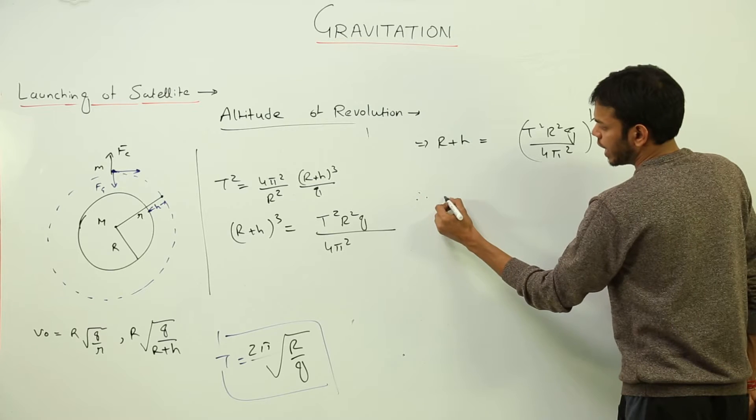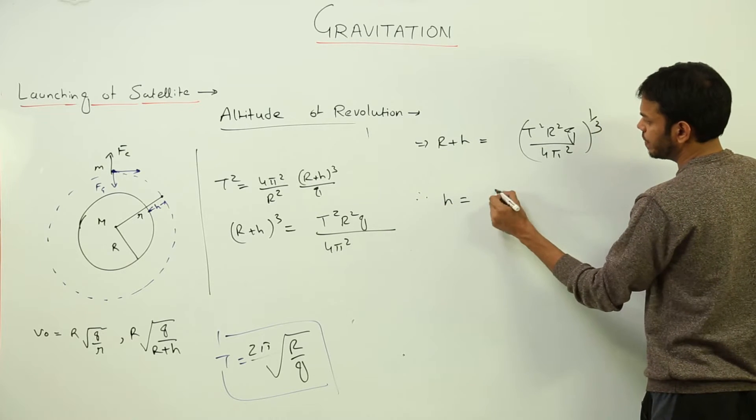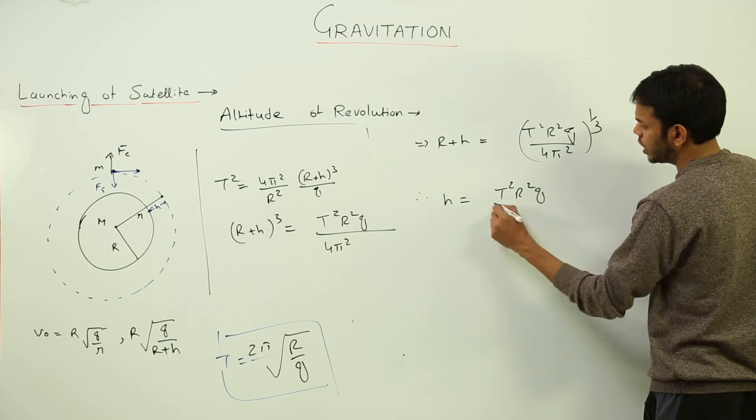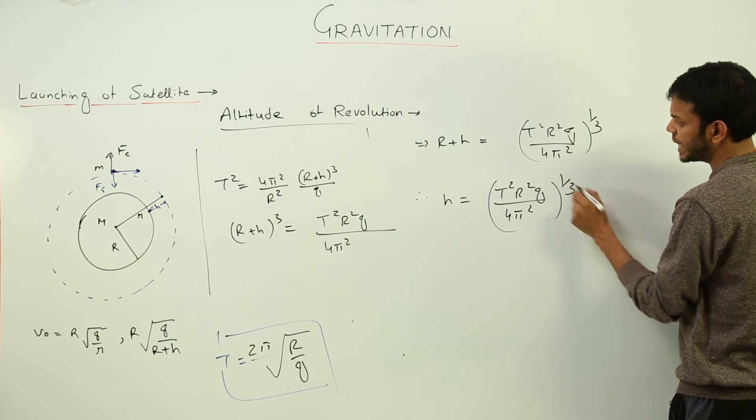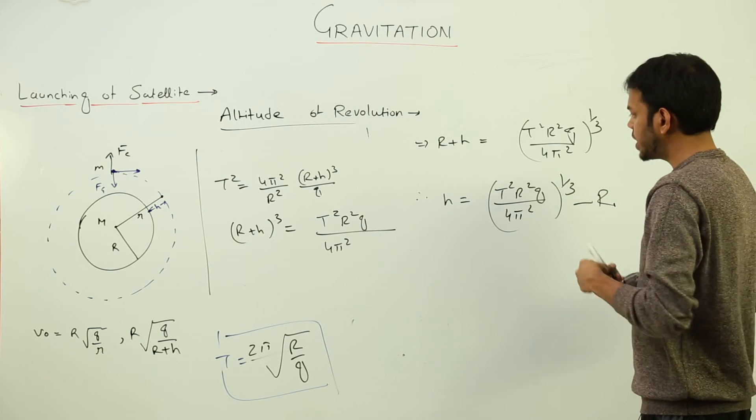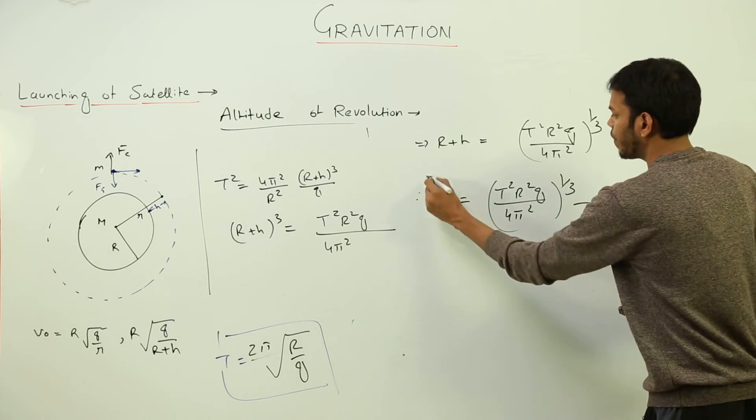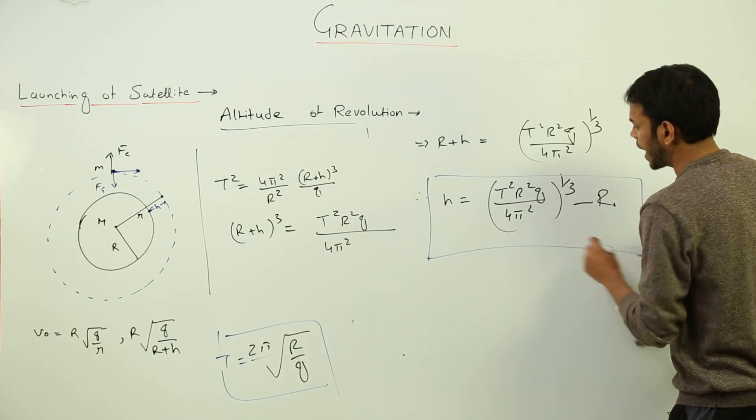And therefore, h is equal to this term t square r square g upon 4 pi square cube root minus the radius of the planet. So this value gives you the exact value of height if you know the value of time period.